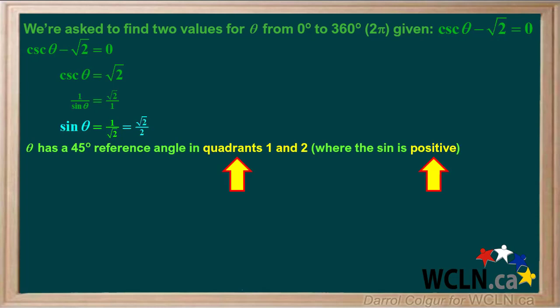So theta will have a reference angle of 45 degrees in quadrants 1 and 2, where the sine is positive.